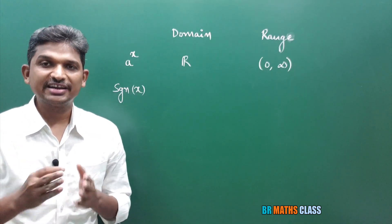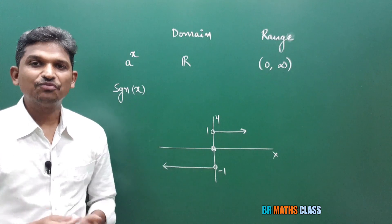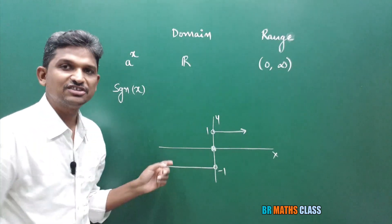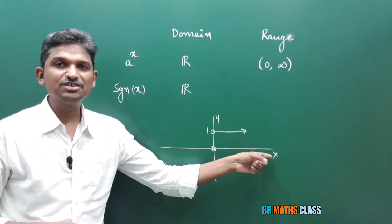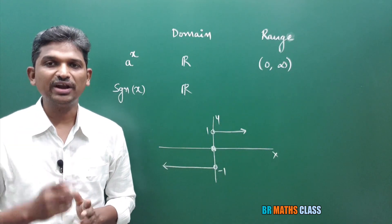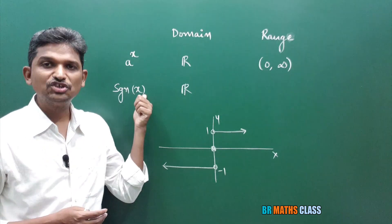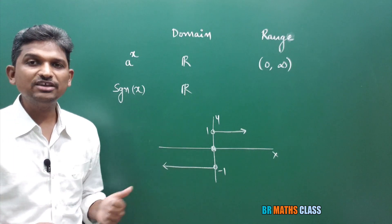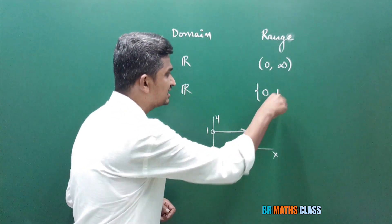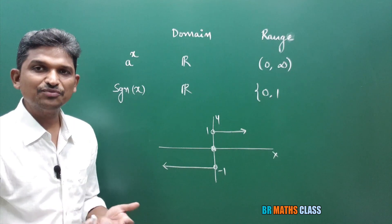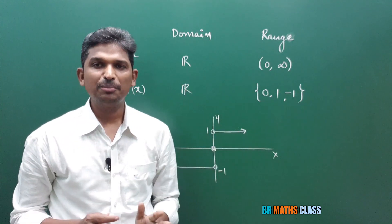Next, the signum function. From its graph, the domain is all real numbers. Whenever x > 0, signum(x) = 1; whenever x < 0, signum(x) = −1; and by definition, signum(0) = 0. So the range of the signum function is {−1, 0, 1}.